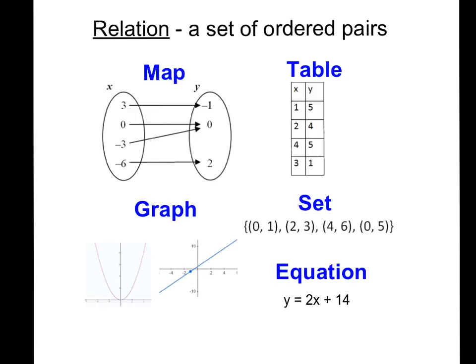The way you read a map is you see which input goes to which output. So in this case, we have the points (3, -1), (0, 0), (-3, 0), and (-6, 2).